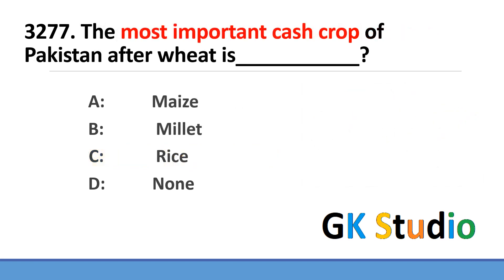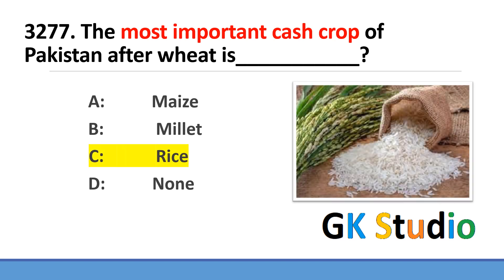The most important cash crop of Pakistan after wheat is rice. Rice is the second most important cash crop of Pakistan.